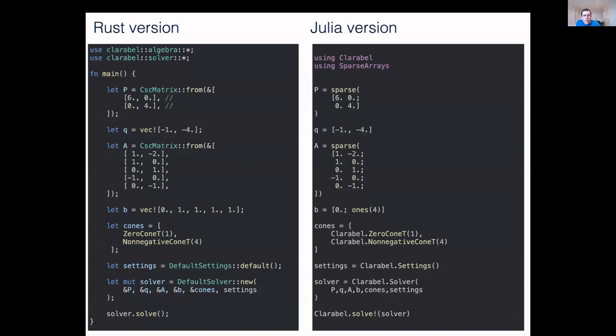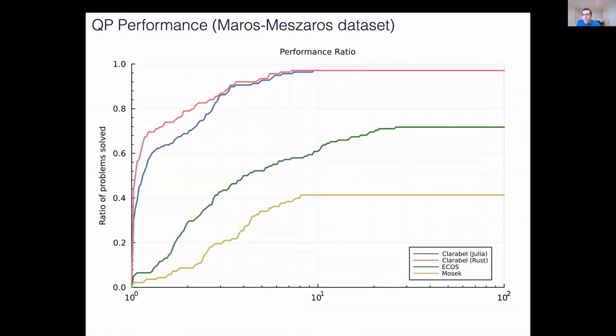I'll talk briefly about the performance. This is what's called a performance profile. Basically, you solve a load of problems with all different solvers, and you ask for each problem, how well did your solver do relative to the best solver for that problem? Then you ask, for what fraction of the problems are you within a factor of one or two or ten of the best one? Ideally, you want to be in the upper left-hand corner of the plot that says you're the best one always.